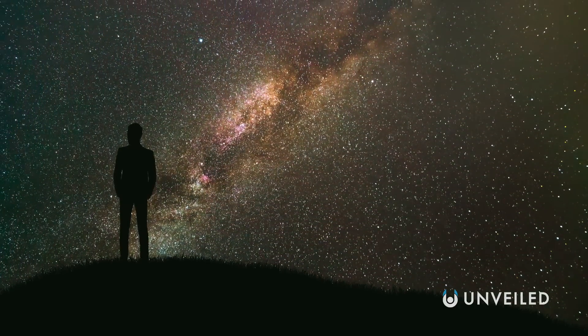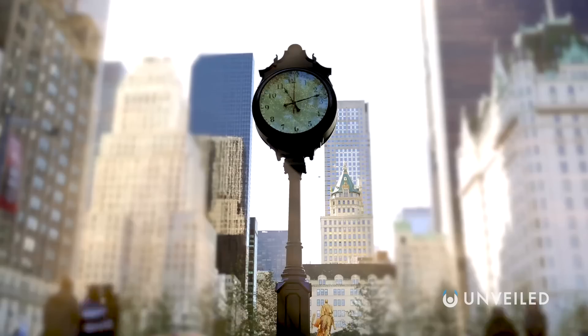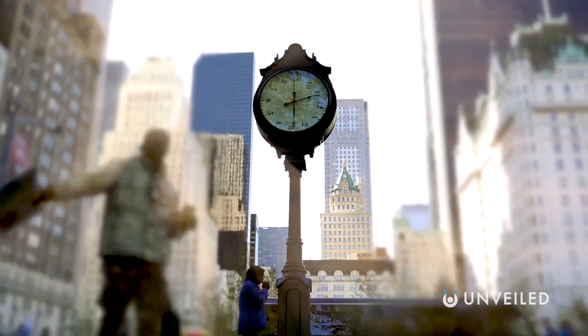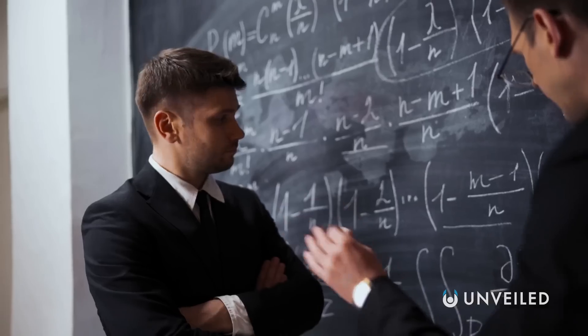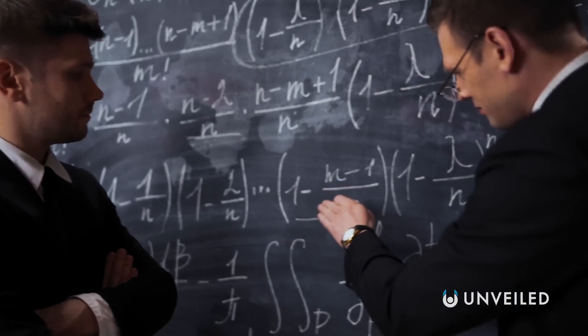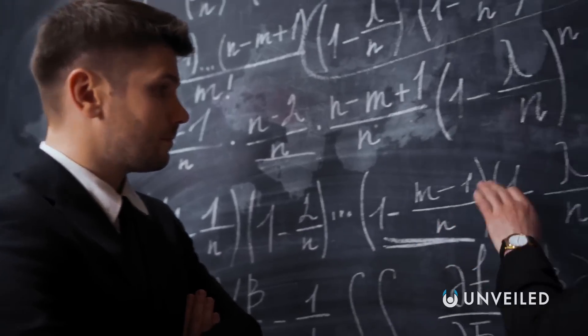More than that, Einstein proved that time works differently according to the observer. In other words, it's all a matter of perspective. Einstein famously wrote, quote, the distinction between past, present, and future is only a stubbornly persistent illusion. End quote. And even today, many scientists retain this assessment.